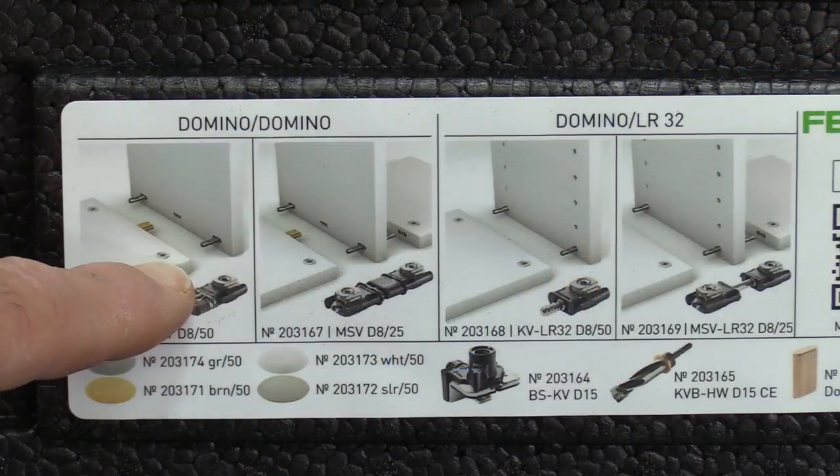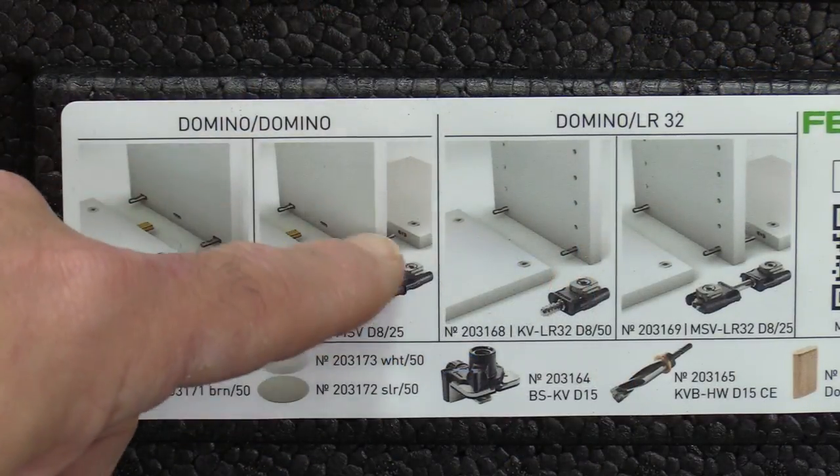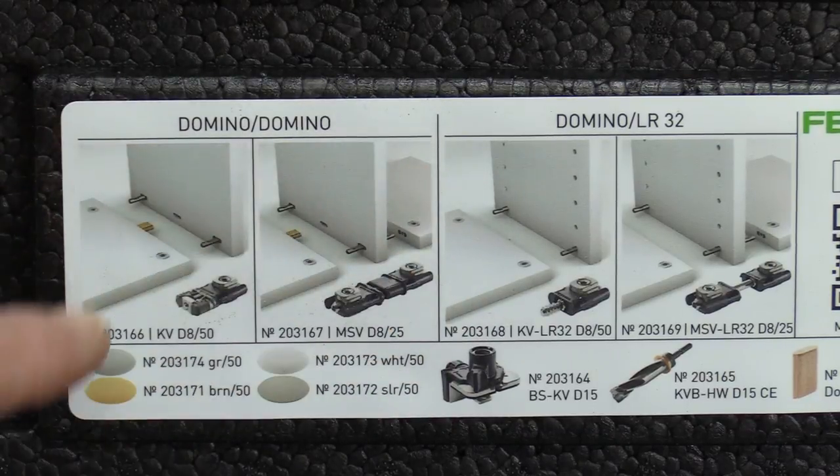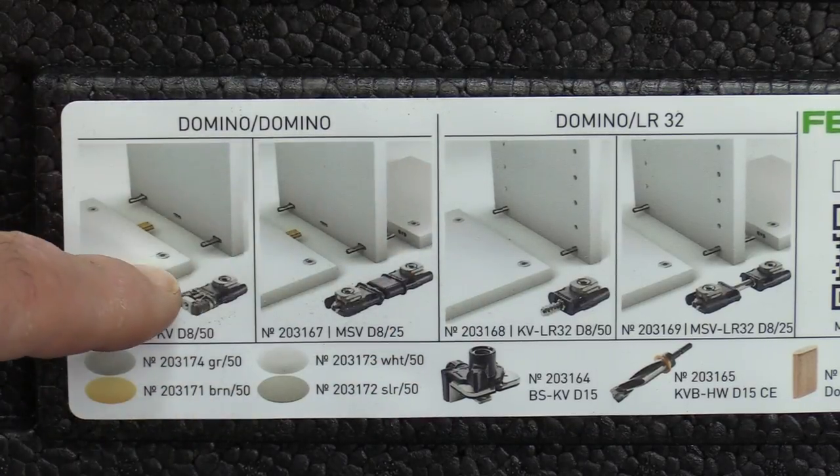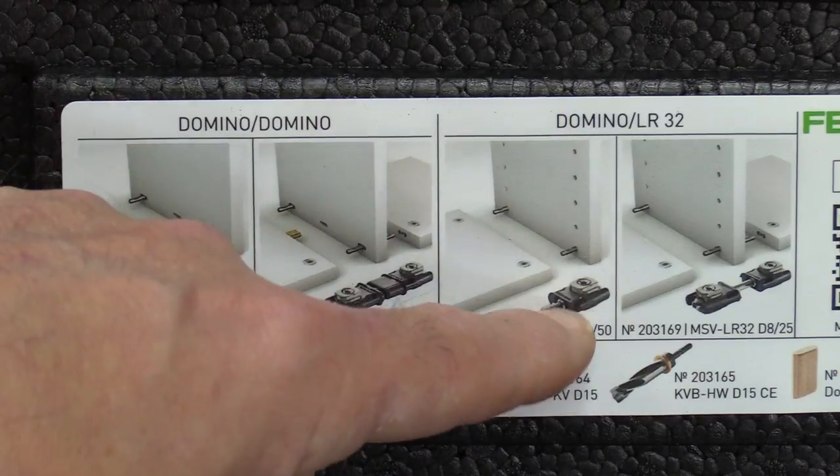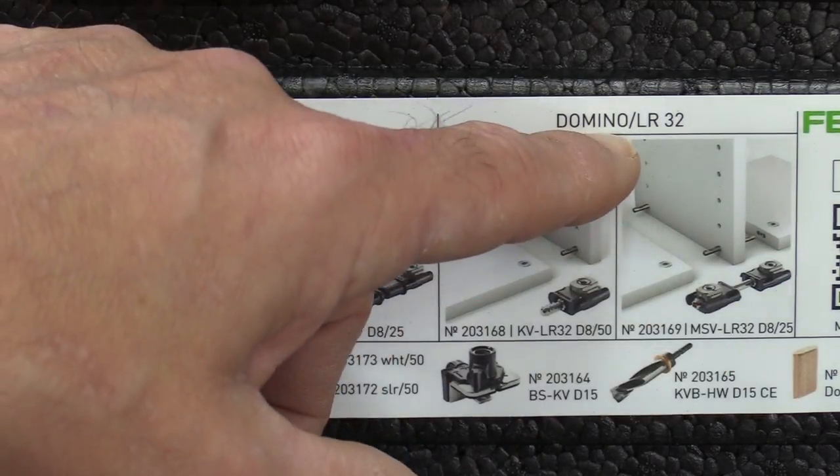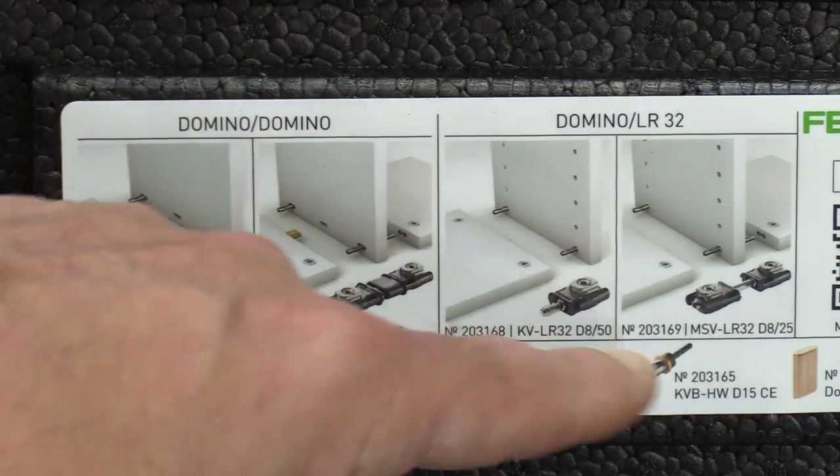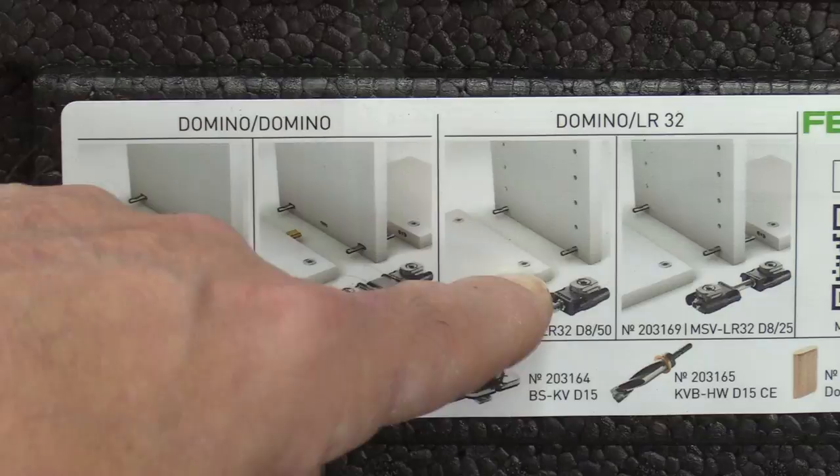The first is a 90 degree butt joint and the second is a butt joint where you've got two pieces on either side of the vertical. Now this uses domino holes on both sides of the joint. You can also make both these joints using the domino in conjunction with the LR32 system which drills five millimeter holes in this vertical piece and then a domino hole here.